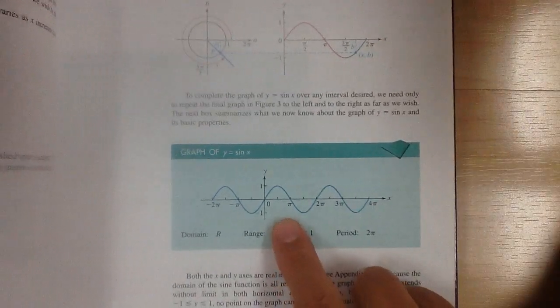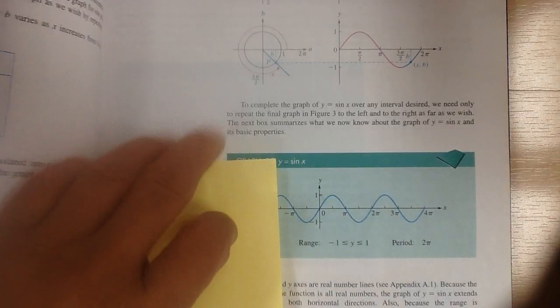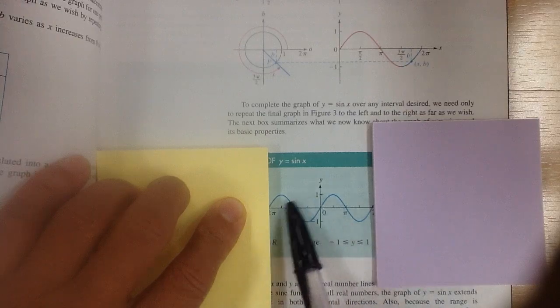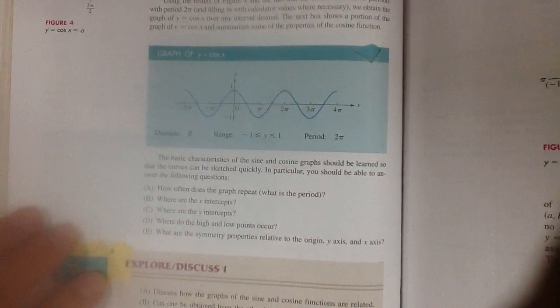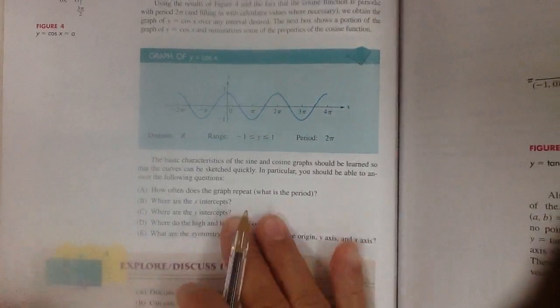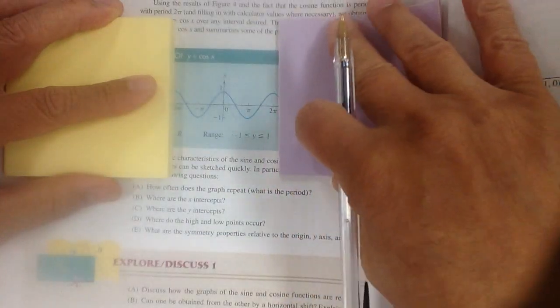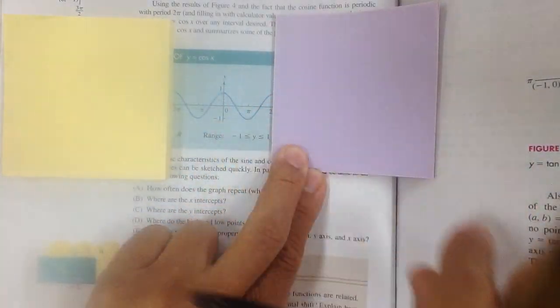Now for graphing. To graph sine x, your graph should look like the standard sine curve. The boundary goes from negative 2pi to positive 2pi, so that is how much of the graph you get.